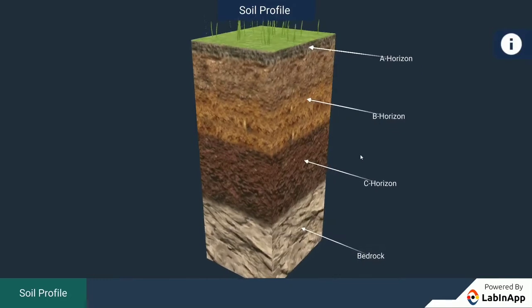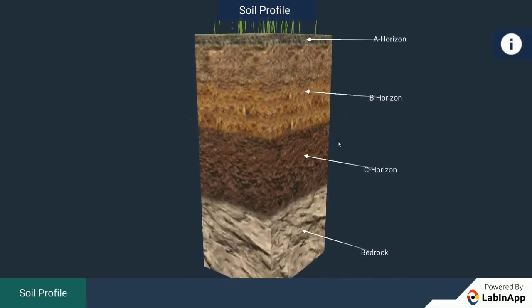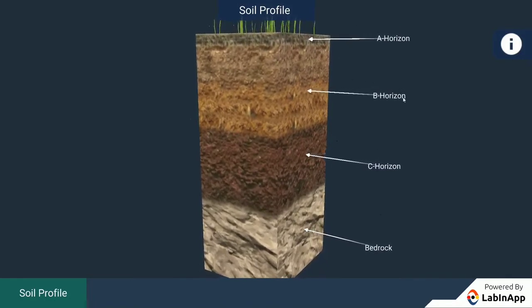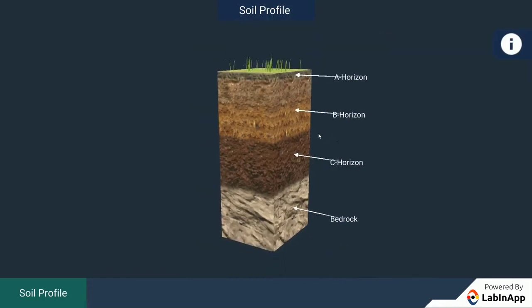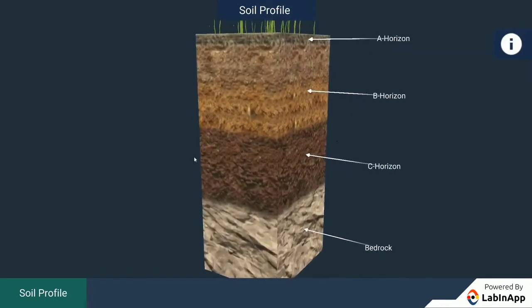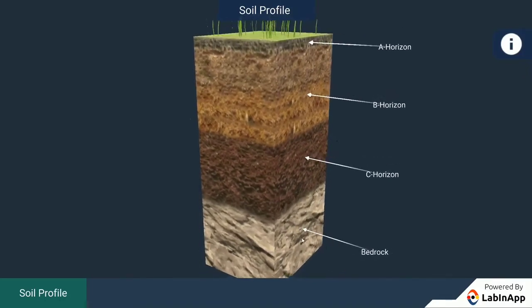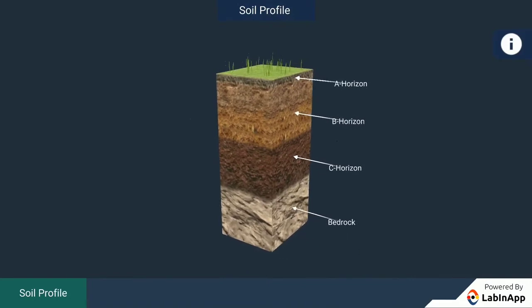The next layer is Horizon B, which has less amount of humus but more amount of minerals. This layer is harder and more compact and is called the subsoil. The third layer, Horizon C, is made up of small lumps or chunks of rocks with cracks and crevices, formed from fragmented rock materials of the bedrock. The last, fourth layer is called the bedrock, which is hard and compact. This entire profile is called the soil profile.